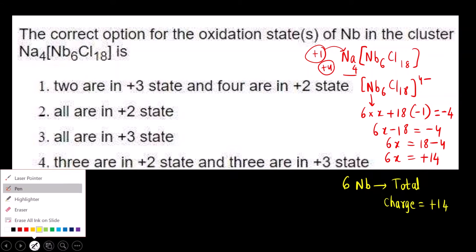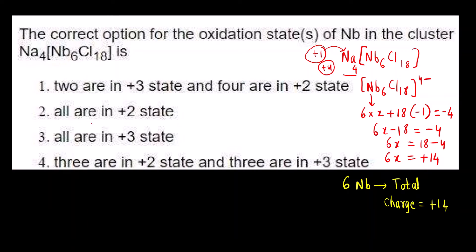Now what we can do is we can check for all the options and check the total overall charge. Two are in plus 3 state, so 2 into plus 3 plus 4. Four niobium are in plus 2 state. Count this: 2, 3 is 6 plus 4, 2 is 8. 8 plus 6, 14. Here we are getting plus 14.